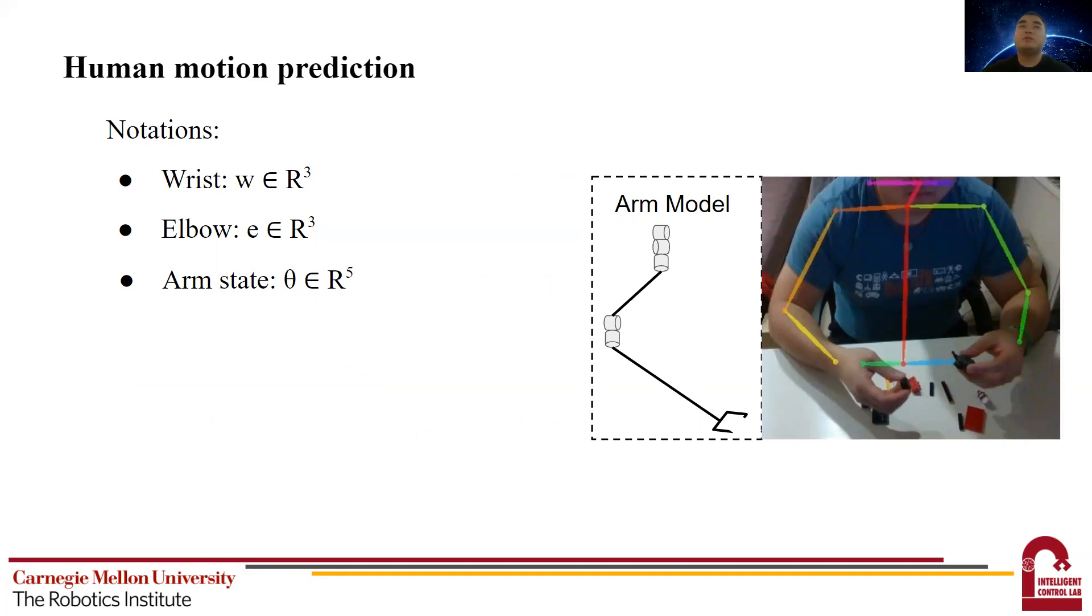Before we dive into more details of the prediction model, I'm going to introduce some notations we use. We use W to denote the 3D position of the wrist. We use E to denote the 3D position of the elbow. And as shown in the red figure, we decompose the human arm into a 5 degree of freedom arm.